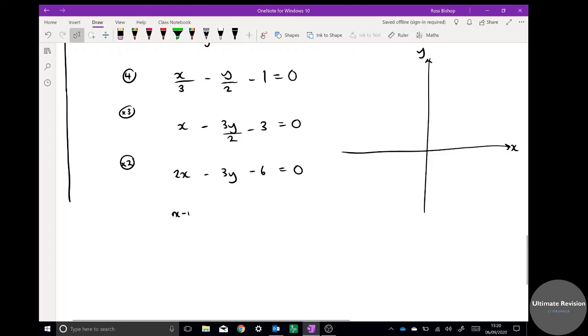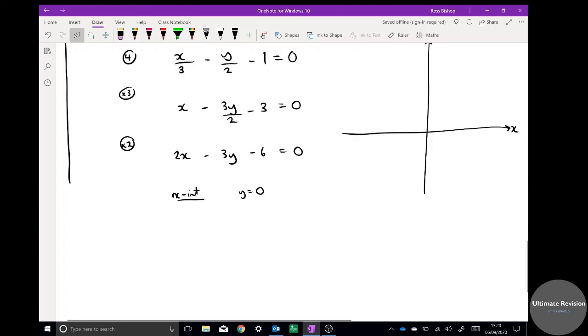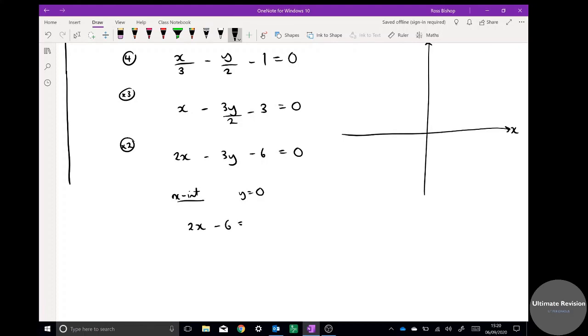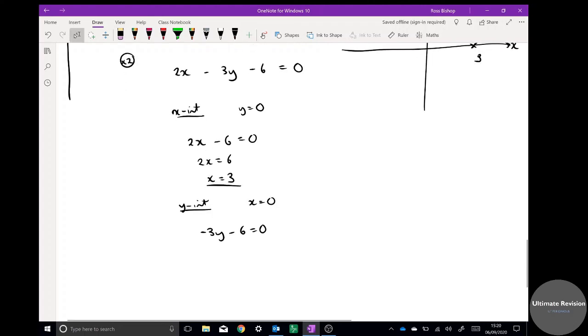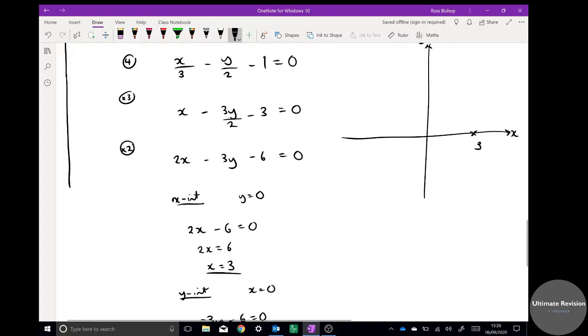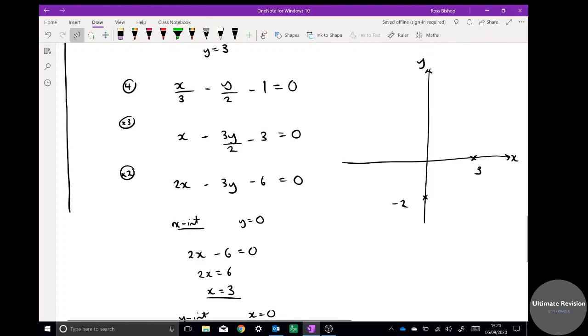If I do the x-intercept first, this is when y equals 0, so I've got 2x, solving a mini equation here: 2x equals 6, x equals 3, so my x-intercept is 3. The y-intercept when x is 0: I've got minus 3y minus 6 equals 0. Solve a mini equation: minus 6 equals 3y, y equals negative 2. So negative 2 roughly there, it doesn't have to be super to scale, and I just draw a straight line between the two. Good practice to label the line.